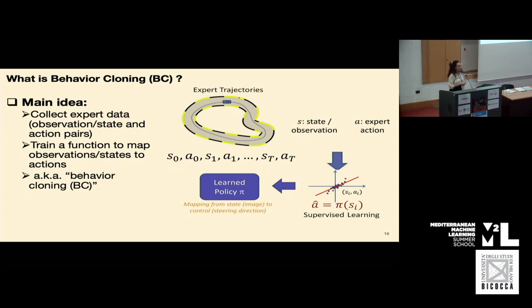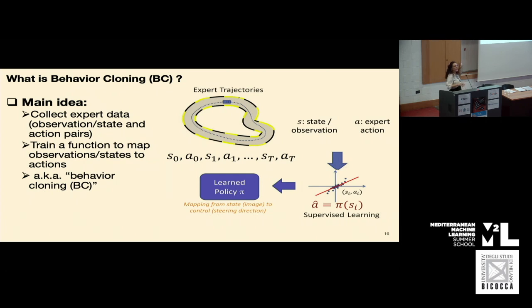Imitation learning contains different methodologies, but we will focus on behavioral cloning — explicitly mapping observations or states to the actions the expert provides. Other techniques include inverse reinforcement learning, where you learn the cost or reward function from demonstrations and then extract a policy. But we focus on simply cloning expert behavior: collect expert trajectories, do supervised learning, and obtain a policy.